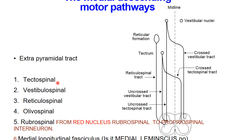The medial and extrapyramidal tracts include the tectospinal, vestibulospinal, reticulospinal, olivospinal, and rubrospinal tracts, as well as the medial longitudinal fasciculus. These tracts are named by their origin and termination — for example, tectospinal originates from the tectum and ends in the spinal cord; vestibulospinal originates from the vestibular nuclei and ends in the spinal cord.